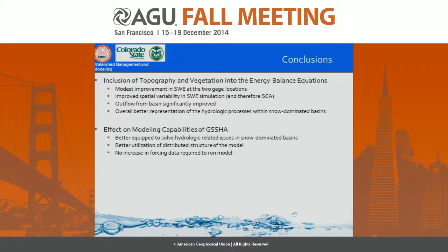Question: Can you comment on the motivation for using GSSHA for this application? We looked at a lot of models, from lumped parameter all the way to fully distributed. We have experience developing the GSSHA model — we have the source code and are familiar with it. It was a good choice for running the basin, and it also has supercomputing capabilities allowing us to run on many processors, which is important because distributed physics-based models can get bogged down.